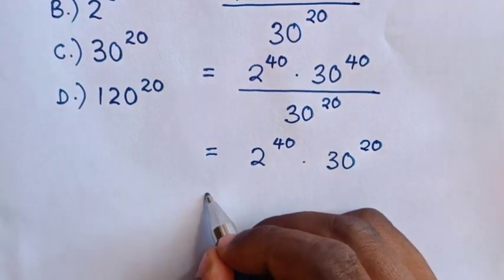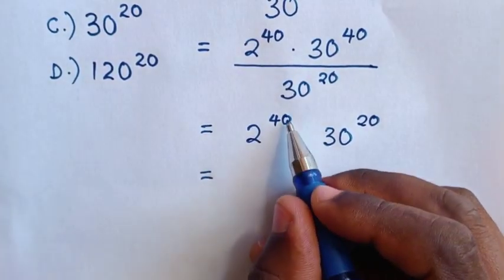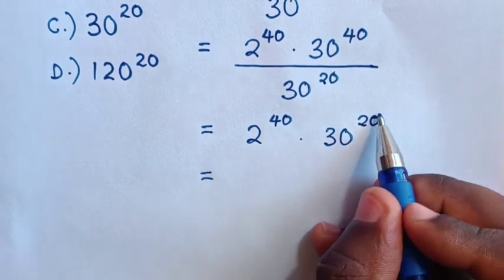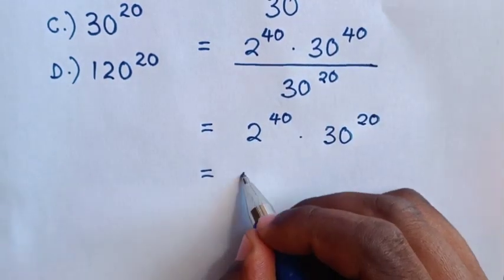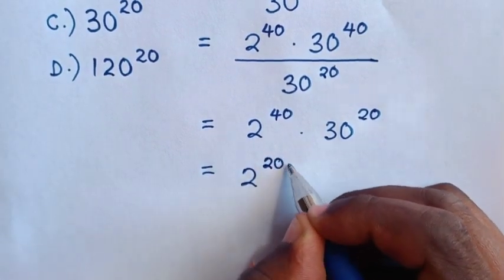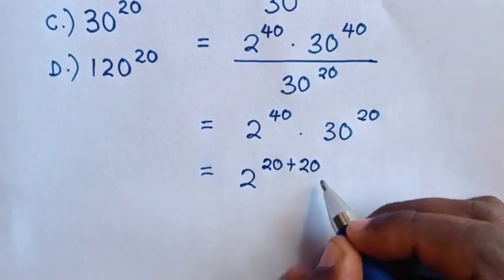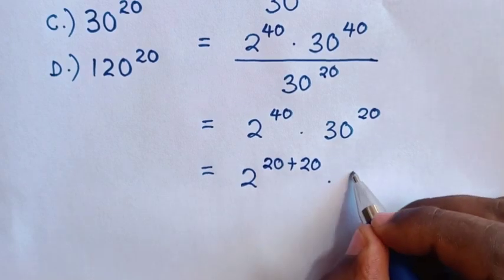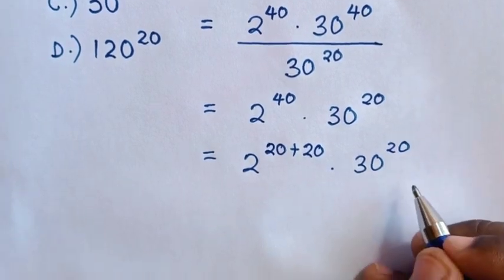Then, this will be equal to, for this power of 40 to have common power of 20, then, this 2 power of 40 is same as power of 20 plus power of 20, then times 30 power of 20.